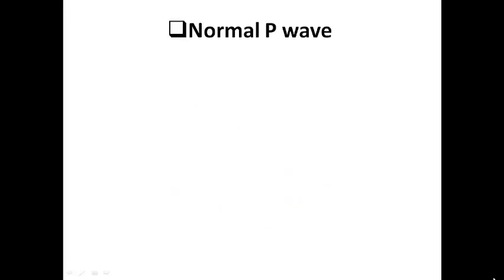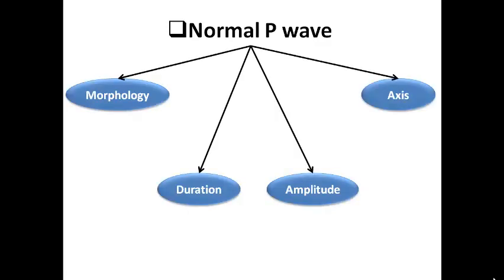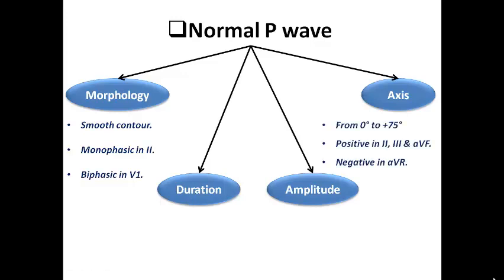We need to start with the normal parameters of the P wave. In order to comment on a P wave, we need to look at the morphology, duration, amplitude, and axis. Regarding morphology, a normal P wave usually shows a smooth contour, is usually monophasic in lead 2 and in most ECG leads, and is biphasic in V1.